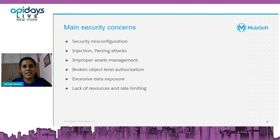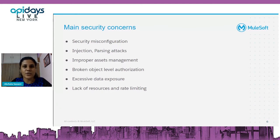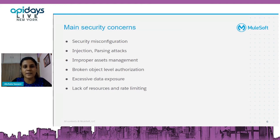Then there's improper assets management. Suppose if non-production data or the staging environment is being exposed, hackers would get information or links to our actual production API. We need to ensure that not only production environments but also non-production environments are carefully streamlined and all assets are taken care of.